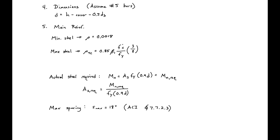Our next step is to find our effective depth D. We find D by taking our height minus our cover minus half of our longitudinal bar diameter. We're going to assume number 5 bars — slab reinforcement is generally number 4s, 5s, or 6s. With a height of 9 inches, a cover requirement of 0.75 inches, and half of the number 5 bar diameter of 0.625 inches, this gives us a D of 7.94 inches.